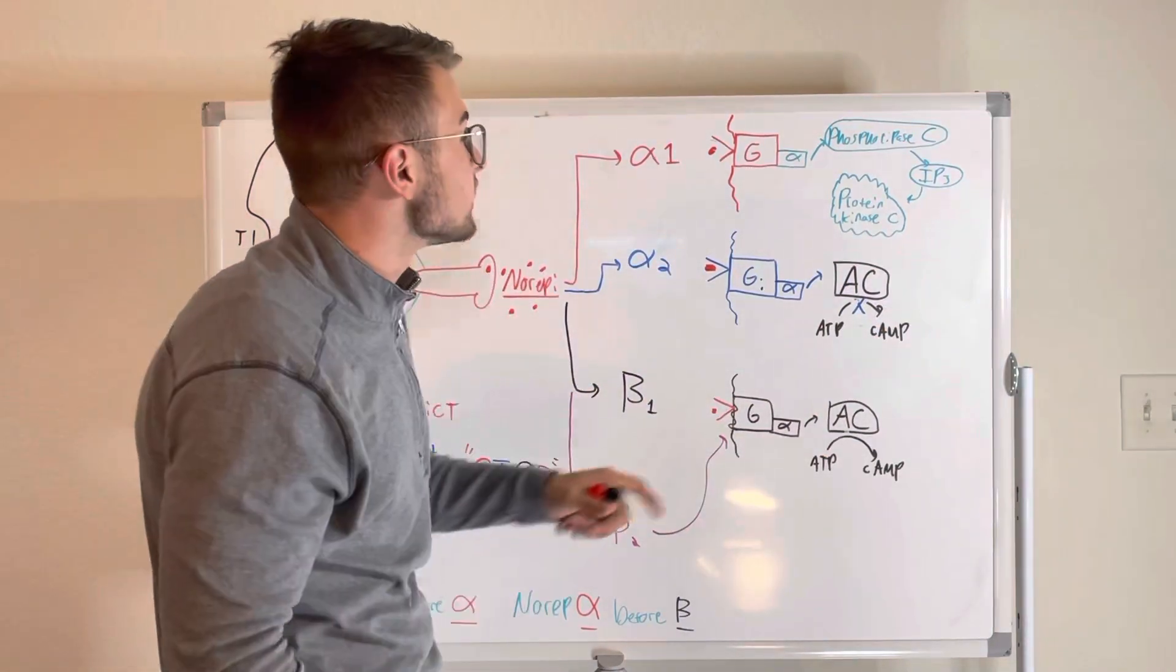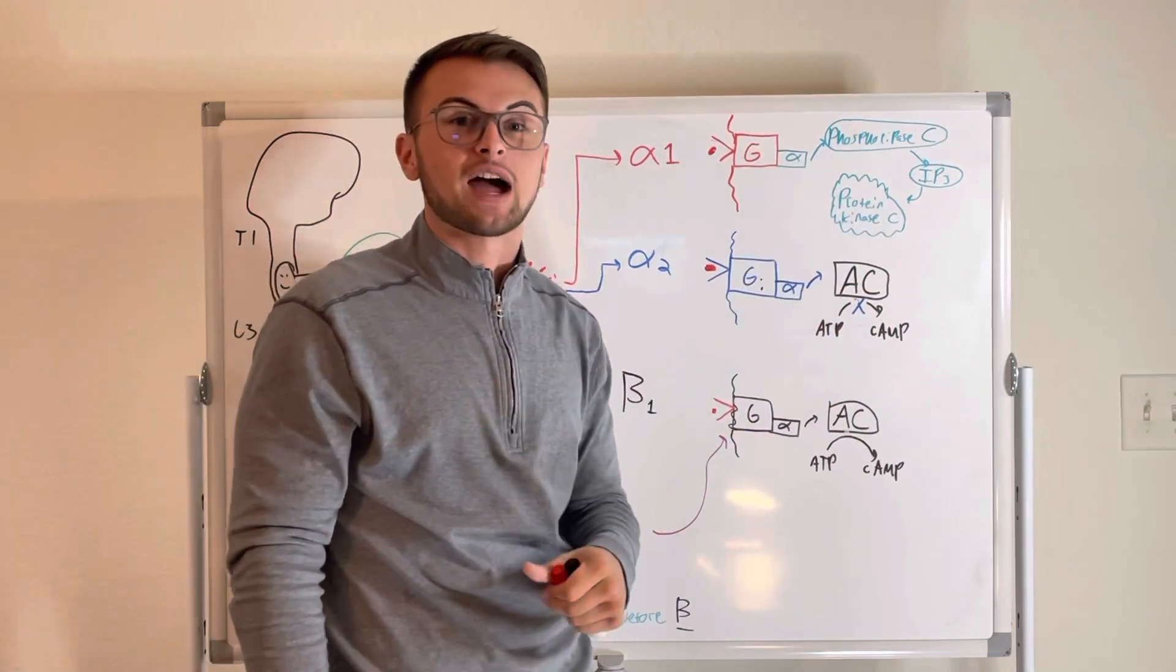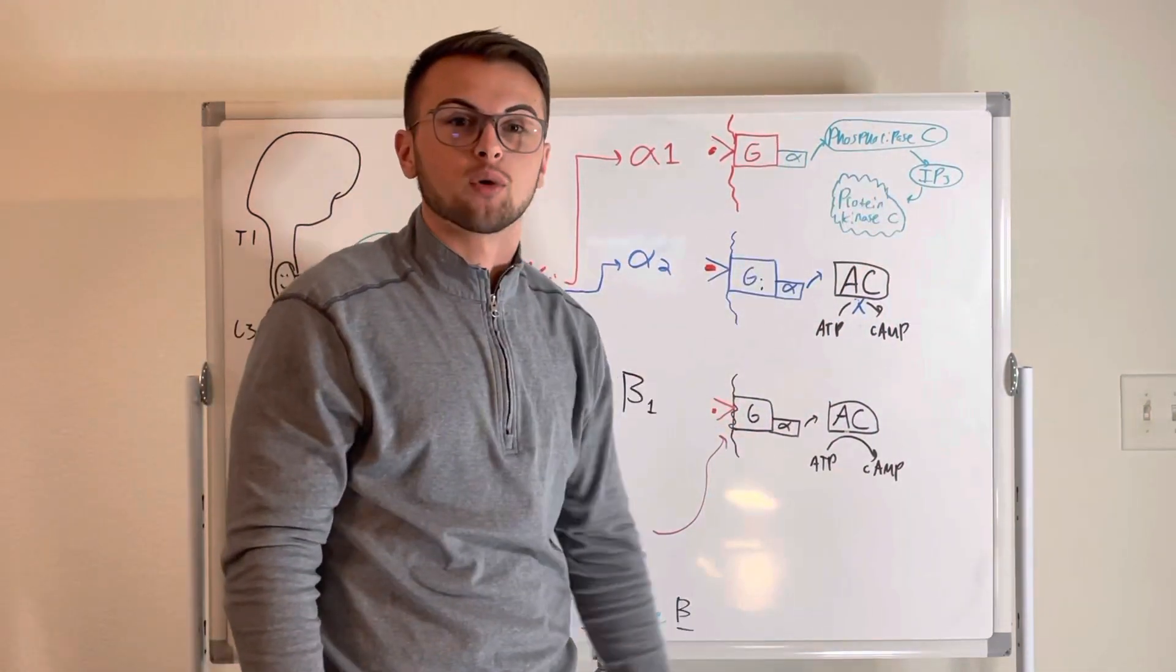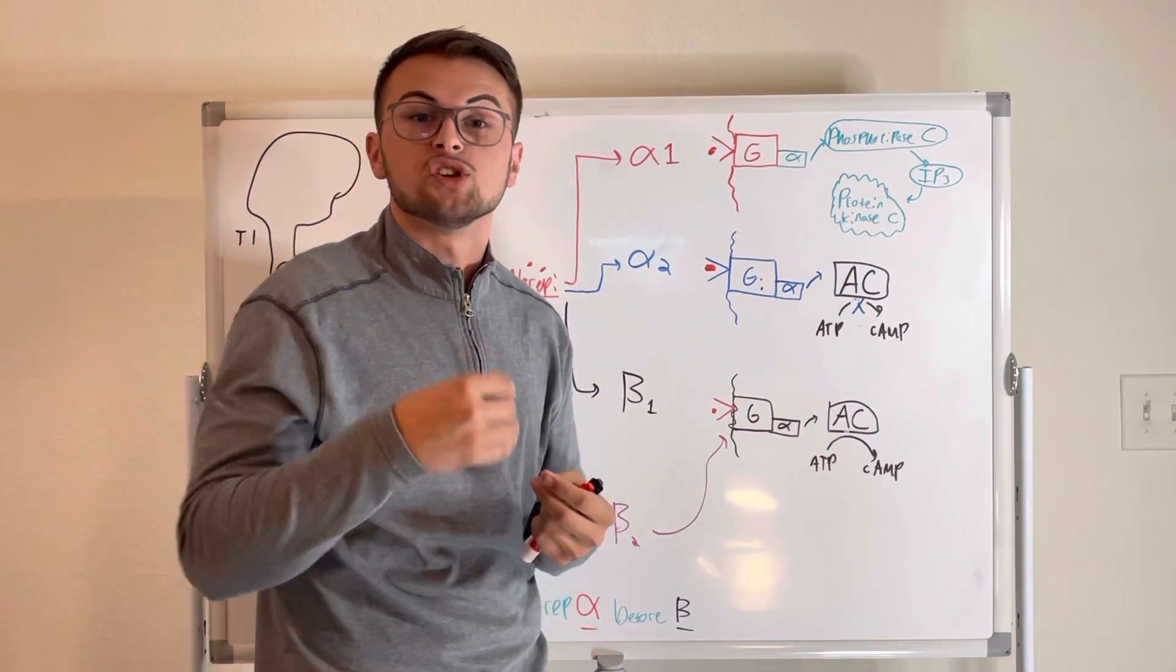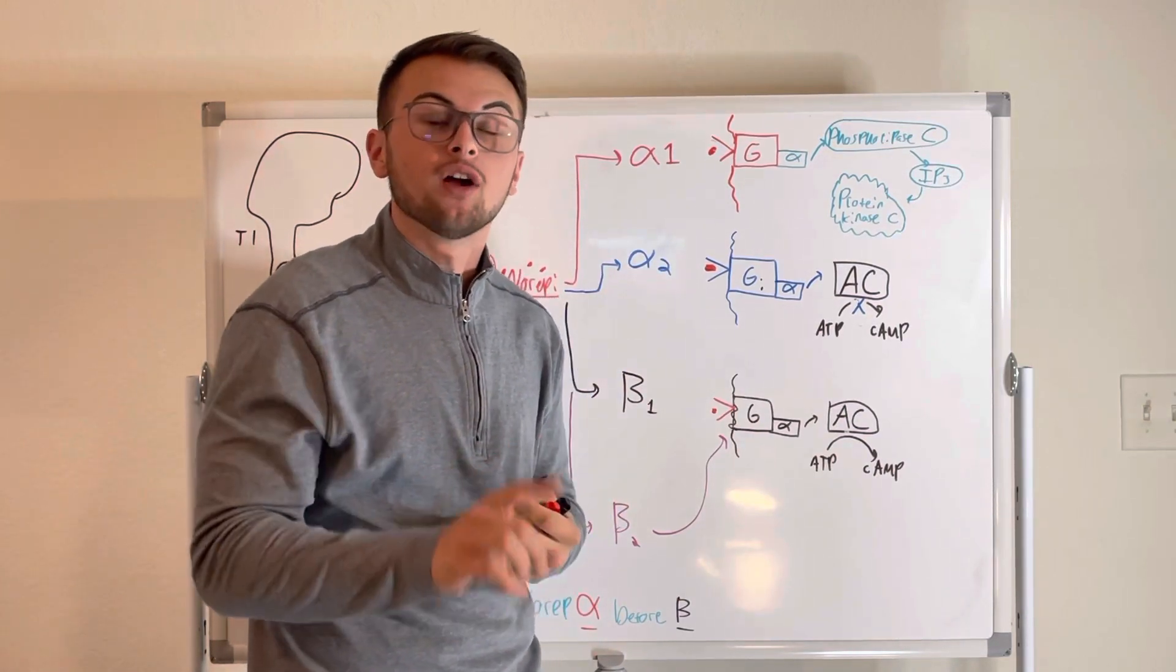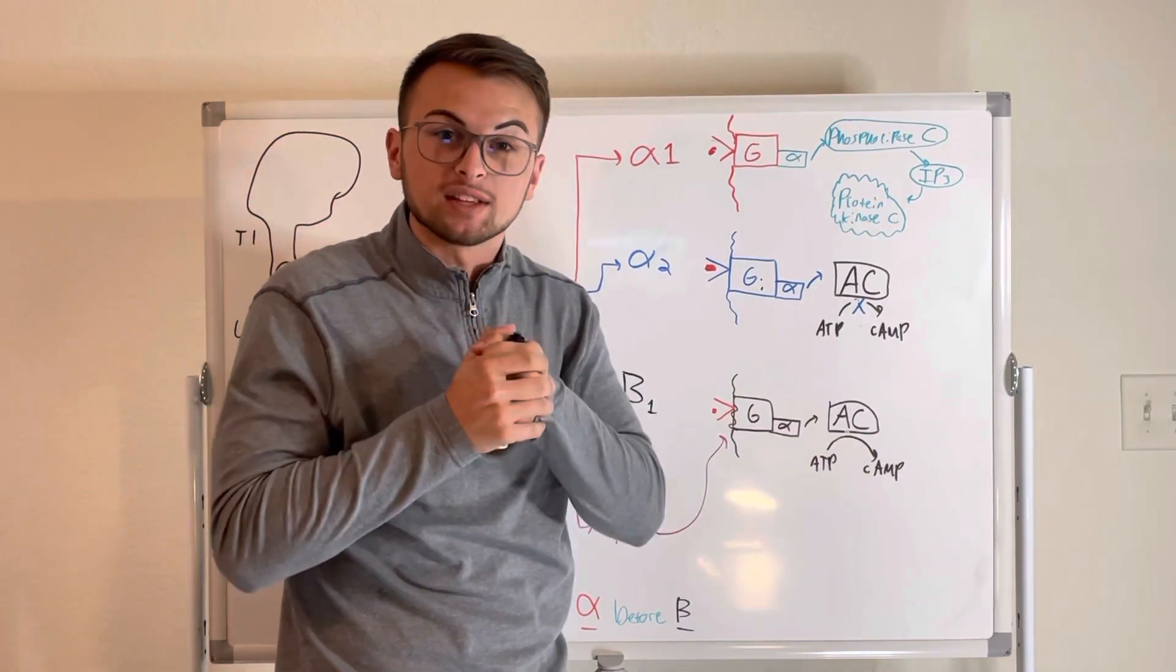So I call this the phospholipase C, IP3, protein kinase C pathway, or the CIP3C pathway. So the end result is that our blood vessels, our GI tract sphincters, and our bladder when we need to pee, of course, will become contracted or constricted.